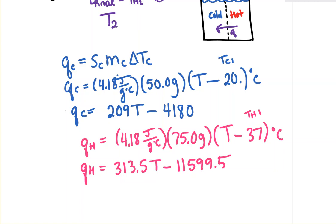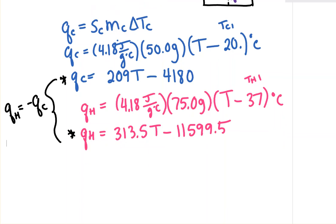We have two equations, but it looks like we can't solve it - too many unknowns. But we know the relationship between these two. The Q for the hot equals the negative Q for the cold. It doesn't matter which one you put the negative sign on, as long as they have opposite signs. So q_H equals negative q_C.